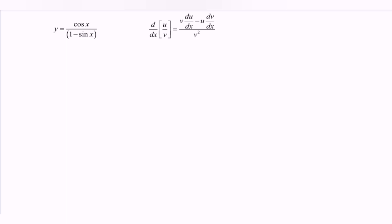So here we have the quotient rule. I refer to the question: y is equal to cos x over 1 minus sin x. So very obvious, here we have u and here we have v.